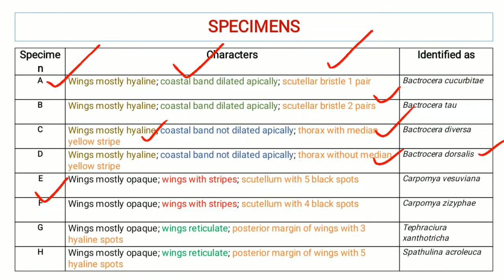Now talking about the second main category: wings mostly opaque. Within the specimens that have opaque wings, there are two further pairs of characteristics: wings with stripes and wings reticulate. Within the wings with stripes group, there are specimens with scutellum having five black spots and some with scutellum having four black spots.